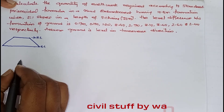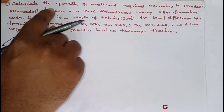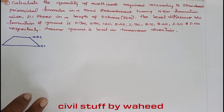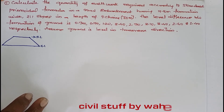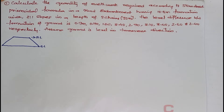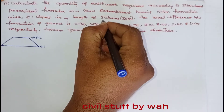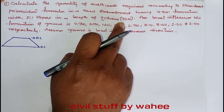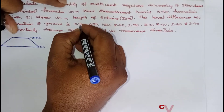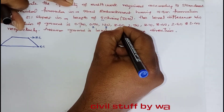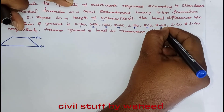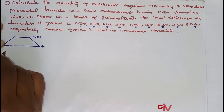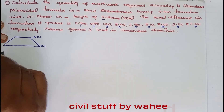Before entering the problem, you should know whether the prismoidal rule is applicable. The condition is: if the number of ordinates is odd, or the number of intervals is even, then the formula can be applied. Here, the intervals are 30 meters each, and counting the ordinates gives 1, 2, 3, 4, 5, 6, 7, 8, 9 — an odd number — so it is applicable.